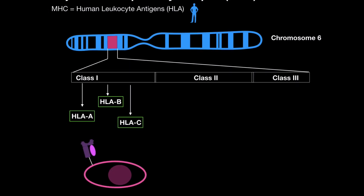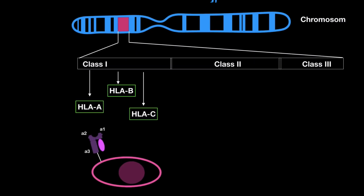The MHC class 1 looks like this: it has an alpha chain composed of three domains — you can imagine a thread forming three loops. Alpha 1 and alpha 2 up there are going to be the binding site for MHC class 1, that's where the peptide is going to be. And the last loop, alpha 3, is where the MHC is bound to the membrane — it's kind of anchored to the membrane. B2 microglobulin, however, is encoded by chromosome 15 — it's going to be constant, meaning it doesn't really change.